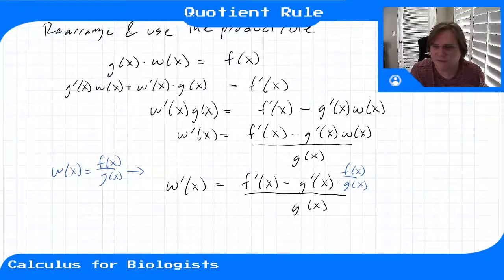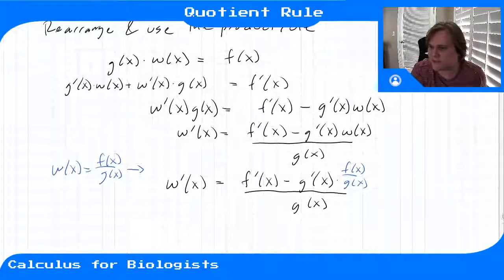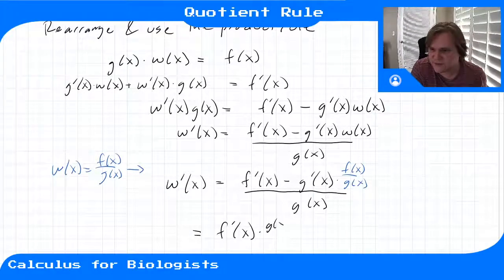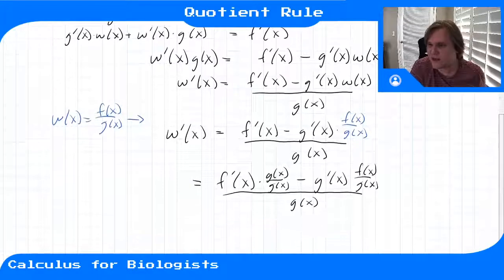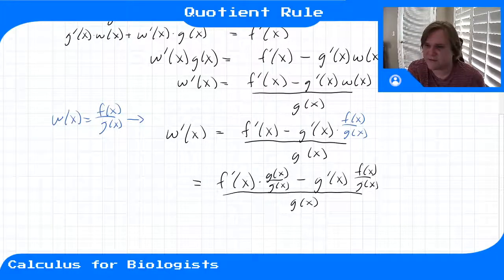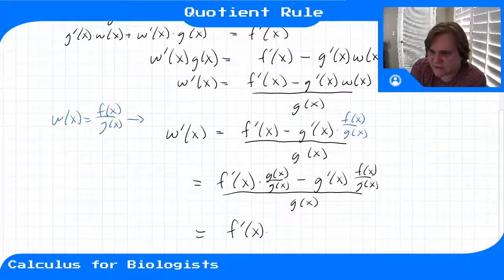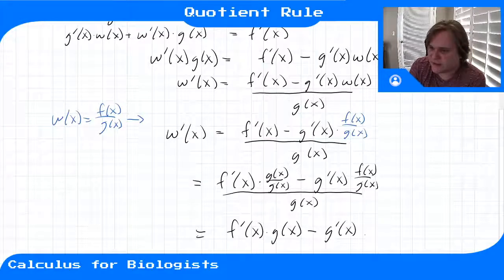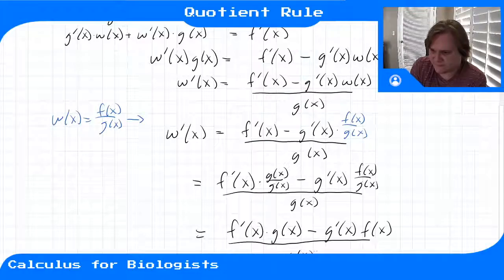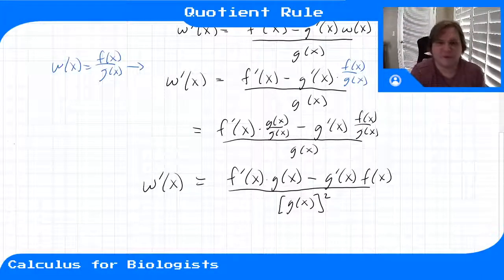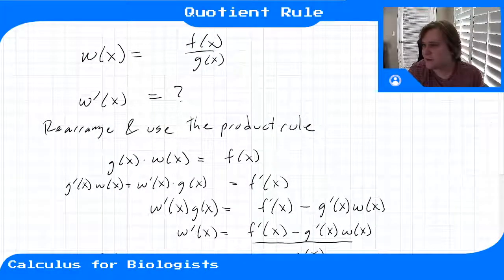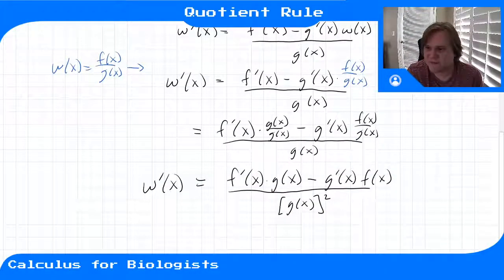To clean this up, we multiply f prime of x by g of x over g of x — that's just multiplying by one — giving f prime of x times g of x over g of x, minus g prime of x times f of x over g of x, all divided by g of x. Pulling the g onto the bottom gives us f prime of x times g of x minus g prime of x times f of x, all divided by g of x squared. That is the quotient rule.